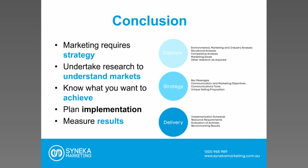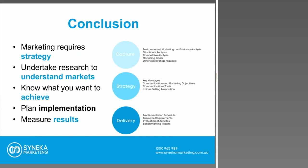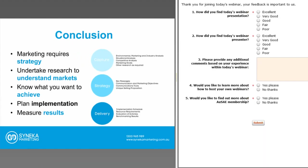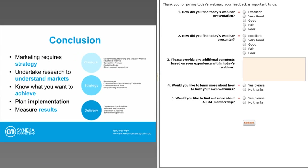To recap the three phases: marketing requires strategy. Undertake research to understand the markets you want to reach. Know what you want to achieve and plan your implementation. Be able to measure those results and articulate any deviations. Ensure you're able to track results both online and offline. Happy to take any questions to conclude today's webinar.